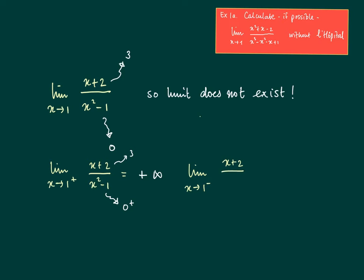And if we approach 1 from the left, we see that we get 3 divided by 0 minus, which is minus infinity. So we don't have any further information than that.